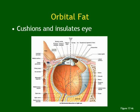Around the eye there is the orbital fat. In fact, every important structure in the body is surrounded by fat — the heart, kidney, liver, and eye are all surrounded by fat. This is different from subcutaneous fat; this is protective fat that acts as a cushion to protect the eye, keep it in place, and prevent it from hitting surrounding bone structures.